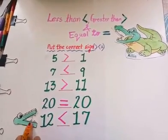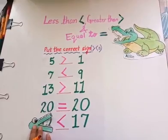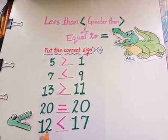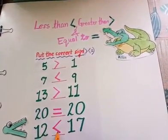See, this sign is same as Ellie's mouth. See children, in less than sign, mouth is closed towards smaller number. Thank you, children.